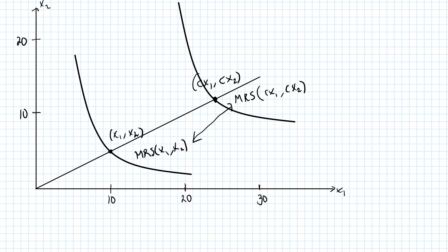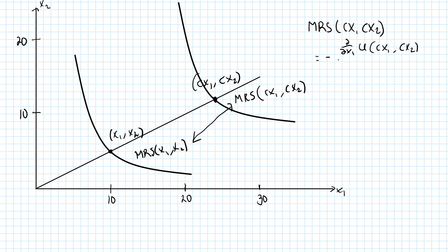It's not hard to prove that this must be the case. The slope of the indifference curve at cx1, cx2 is by definition minus the partial derivative with respect to the first good of the utility function evaluated at cx1, cx2, divided by the partial derivative with respect to the second variable of the utility function evaluated at the same point. MRS is equal to minus the ratio of marginal utilities.